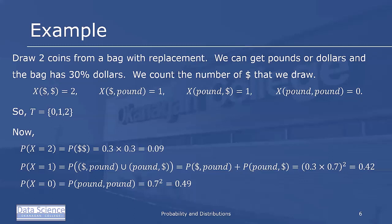The probability that x equals 0 is the probability of pound-pound, which is equal to 0.7 squared or 0.49. In this calculation, we equated two different concepts: the probability of the output of x and the probability of the samples in omega. For example, we said that the probability that x equals 0 was equal to the probability of pound-pound.